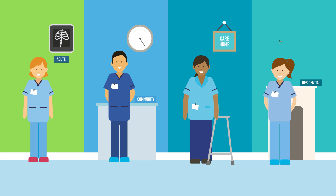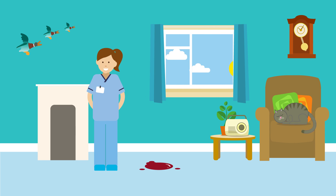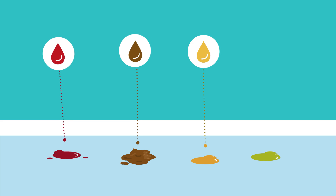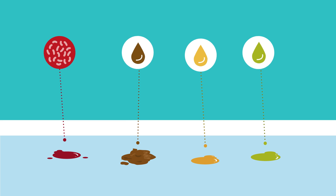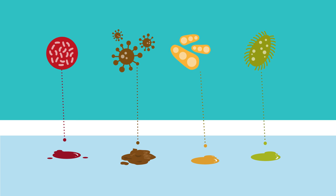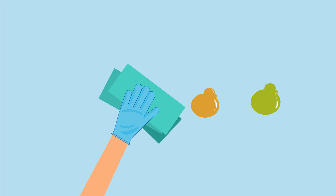For healthcare staff working in acute, community, care home and residential settings, dealing with blood and body fluid spillages can be a regular and challenging occurrence. Body fluids including blood, faeces, vomit and sputum are considered to be potential sources for blood-borne viruses, for example Hepatitis B, or other microorganisms. It is therefore vital that all spillages of blood and body fluids are cleaned up as soon as possible and contaminated surfaces are disinfected immediately.